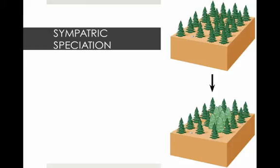Sympatric speciation is when a new species arises within the range of a parent population — it's not geographically separate. Mutations such as polyploidy, which is multiple chromosome sets, can produce a new species in plants. In animals, members of the population become genetically different from the parent population and begin using different resources within the same environment.